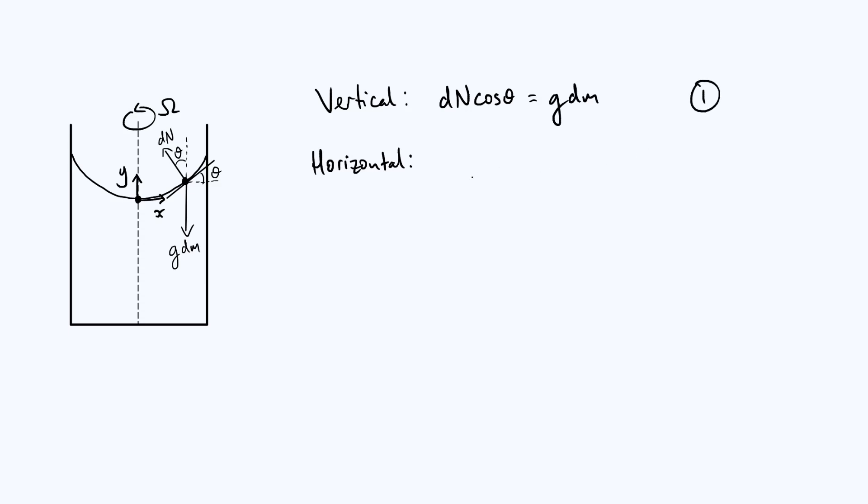Horizontally the forces are not balanced, there's an unbalanced component of the normal force dn. That unbalanced component is dn sin theta, and that must be equal to the centripetal force given by the general expression mr omega squared, where r is the radius of the circular motion. Here your m is really dm, the infinitesimal mass element, the radius of circular motion straight from the diagram is x, just the x coordinate of that particular particle, and we are going at angular velocity omega, so we just put omega squared there. We have a second equation.